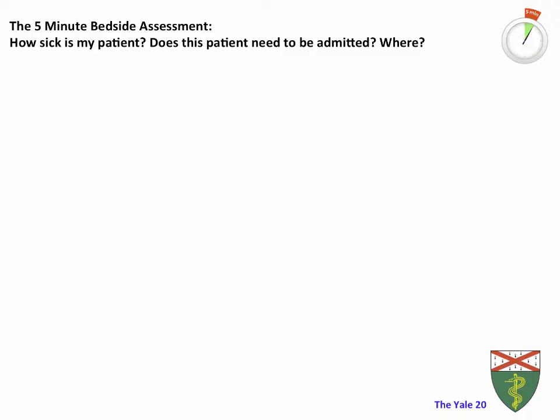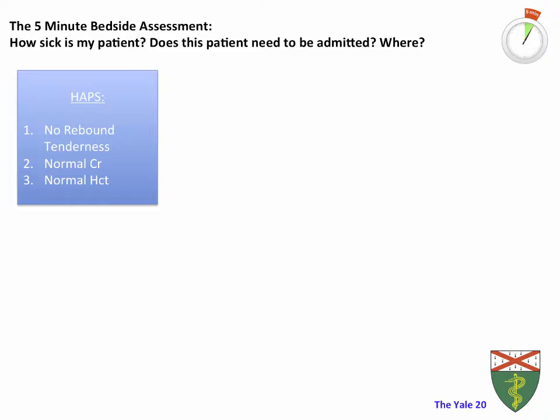There are several validated criteria to help make this decision. One lesser-known criterion is the HAPS score — the Harmless Acute Pancreatitis Score. This straightforward system assesses whether a patient will have a complicated course of acute pancreatitis. It consists of three questions: Does the patient have rebound tenderness? Does the patient have a normal creatinine? Does the patient have a normal hematocrit? A score of zero is associated with the absence of pancreatic necrosis, no need for dialysis or artificial ventilation, and a 97% likelihood of no fatal event. The HAPS criteria has a 98% positive predictive value, so a score of zero suggests the patient may not need to be admitted, or if so, a general medicine floor with close observation will be sufficient.